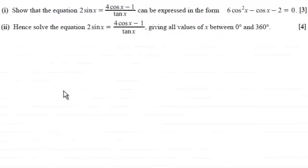Hi there. Now in this question we've got to show that the equation 2 sin x equals 4 cos x minus 1 all divided by tan x can be expressed in the form 6 cos squared x minus cos x minus 2 equals 0. And then we've got to go on and hence solve the equation, giving all the values of x between 0 degrees and 360 degrees.